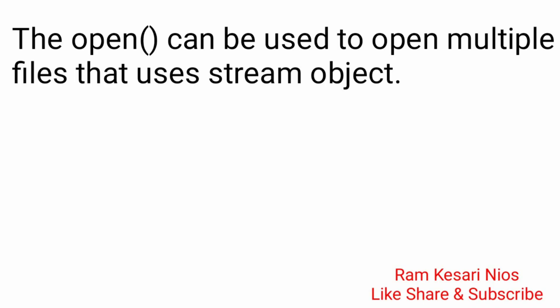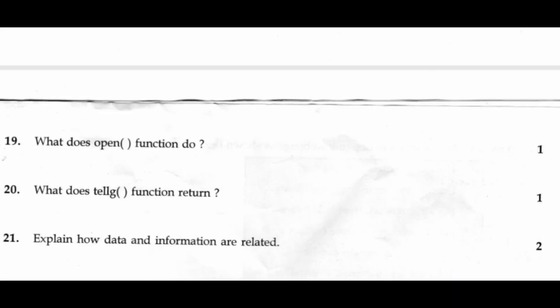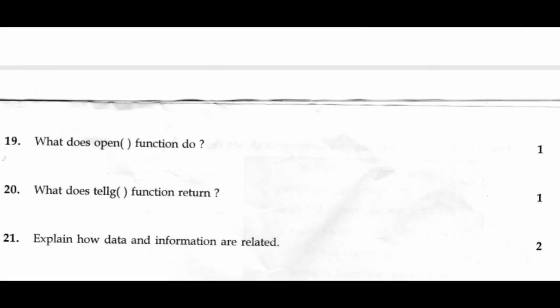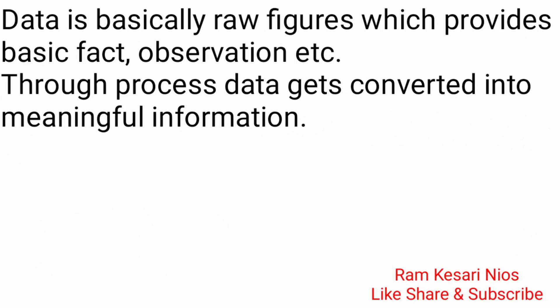Question 19: What does the open() function do? The open() function can be used to open multiple files that use the same stream object. Question 20: What does the tellg() function return? The tellg() function gives the position of the get pointer in terms of number of bytes. Question 21: Explain how data and information are related. Data is basically raw figures which provide basic facts and observations. Through processing, data gets converted into meaningful information.